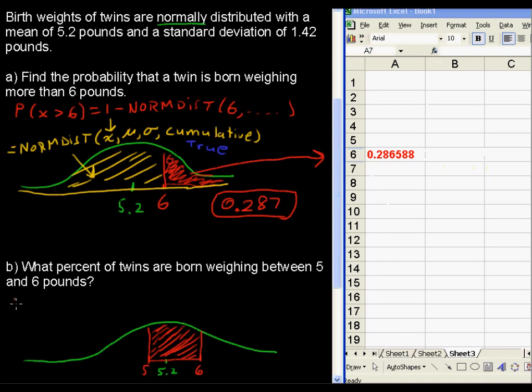So if we did normdist with the 6 and all this other information, we would get this area in orange, all the area to the left. And if we did normdist with a 5 and all this other stuff, we would get this area in the yellow.